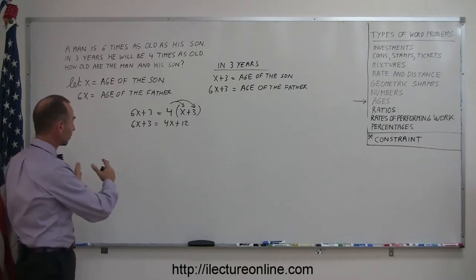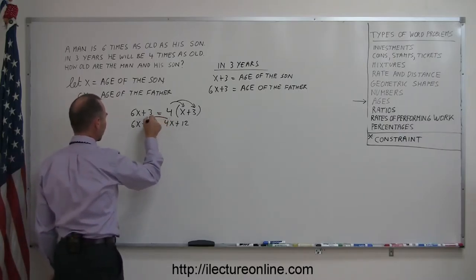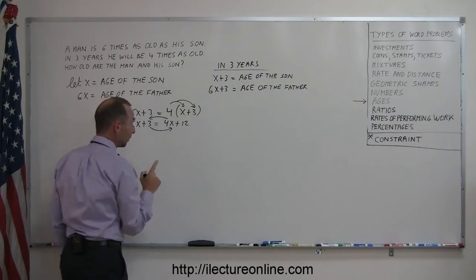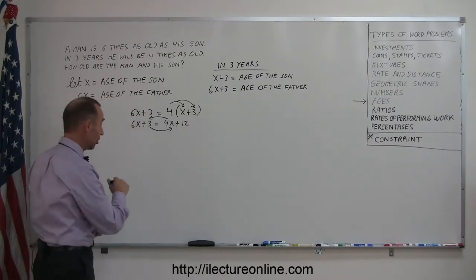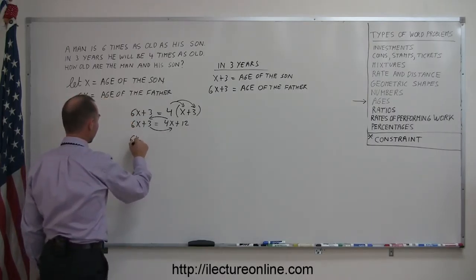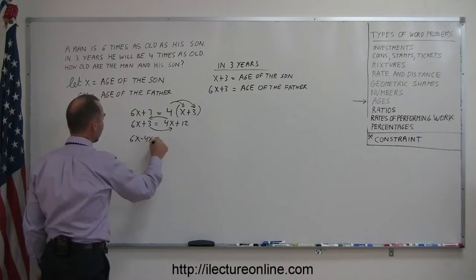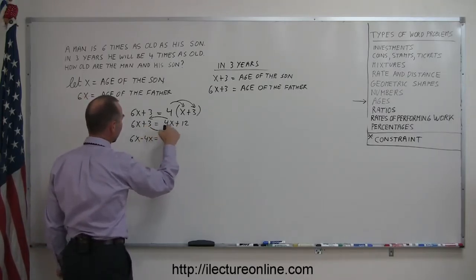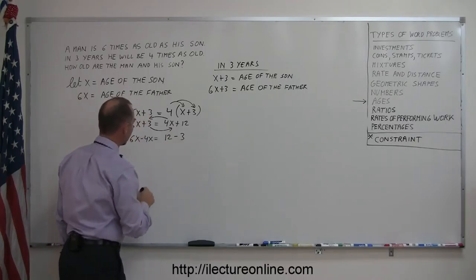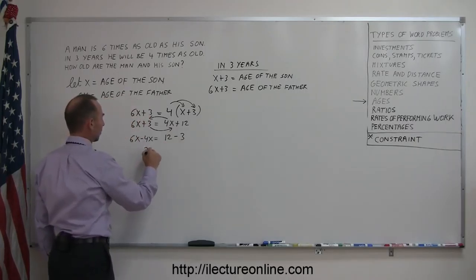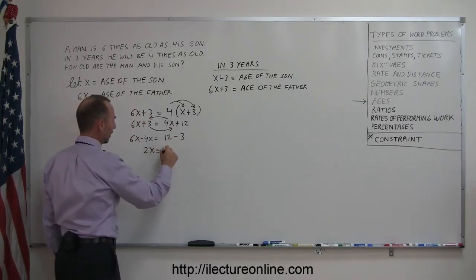Remember, apply the four to both terms inside the parentheses. Now we move all the x's to one side, all the numbers to the other side. So the 4x goes here, the three goes there. Remember when we cross equal sign, we want to change the sign. So we end up with 6x minus 4x is equal to twelve minus three. 6x minus 4x, that's 2x. Twelve minus three, that's nine.